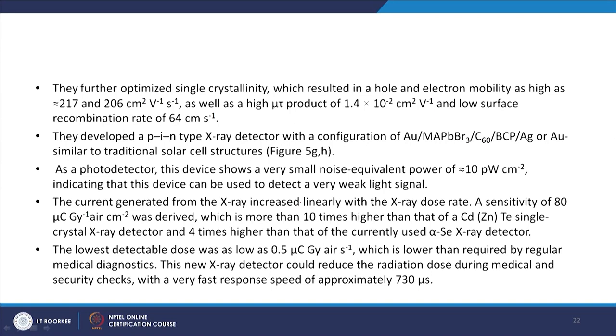The Hwang group first developed gold-MAPbI3-gallium structured PIN type detectors showing narrow-band response due to high surface recombination rate. They further optimized single crystallinity, resulting in hole and electron mobility as high as 217 and 206 cm² V⁻¹ s⁻¹, and a mobility-lifetime (μτ) product of 1.4×10⁻² cm² V⁻¹. A low surface recombination rate of 64 cm s⁻¹ was achieved — both the μτ product increased and surface recombination rate reduced due to the perovskite single crystal. They developed a PIN type X-ray detector with configuration gold/MAPbBr3/C60/BCP/Ag or Au, similar to a traditional solar cell structure with asymmetric metal electrodes.